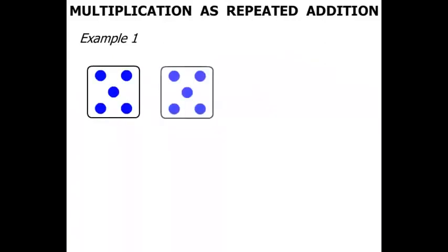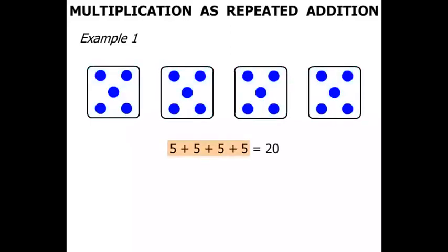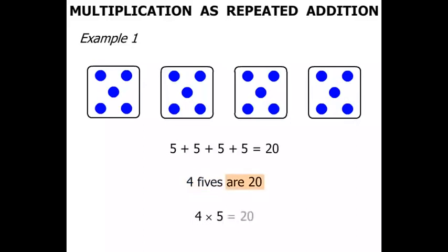On the dice there's our 5's: 5, 5, 5, 5, another 5. As an addition, 5 plus 5 plus 5 plus 5. What does it equal? Well let's count in 5's: 5, 10, 15, 20. It equals 20. Now how many 5's have we got there? We've got 4 of them. So we say that 4 5's are 20, and 4 5's can be written as 4 times 5, which of course equals 20.